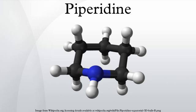Piperidine is used as a solvent and as a base. N-formylpiperidine is a polar aprotic solvent with better hydrocarbon solubility than other amide solvents, and 2,2,6,6-tetramethylpiperidine is a highly sterically hindered base, useful because of its low nucleophilicity and high solubility in organic solvents.